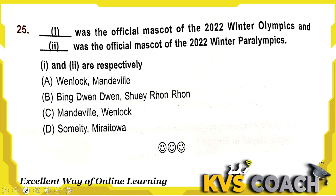Next: dash was the official mascot of the 2022 Winter Olympics and dash was the official mascot of the 2022 Winter Paralympic Games. Bing Dwen Dwen and Shuey Rhon Rhon are the mascots for the Winter Olympics and Winter Paralympics. Option B is the right answer here.